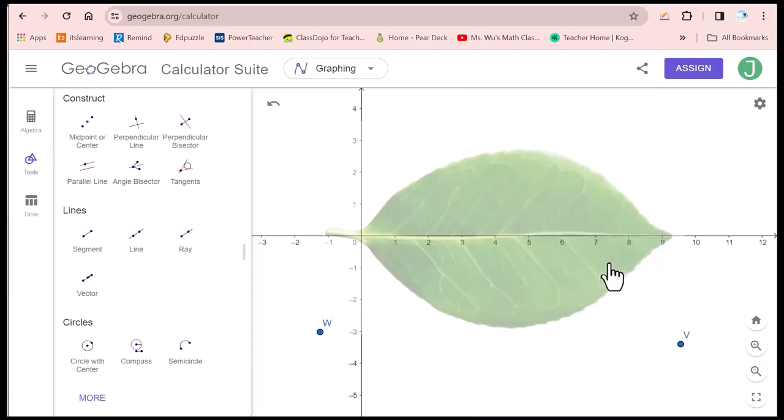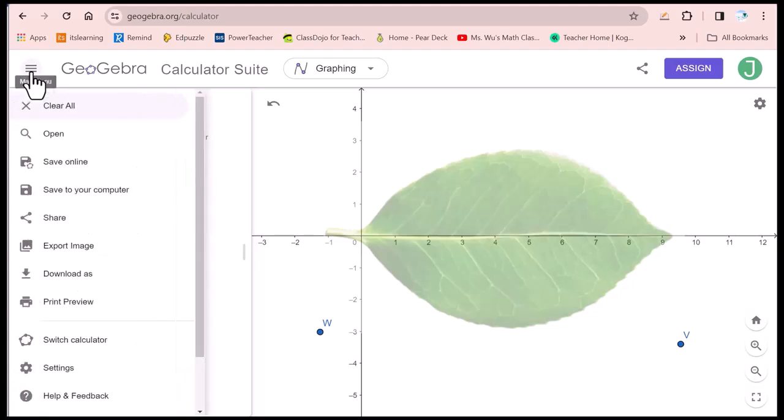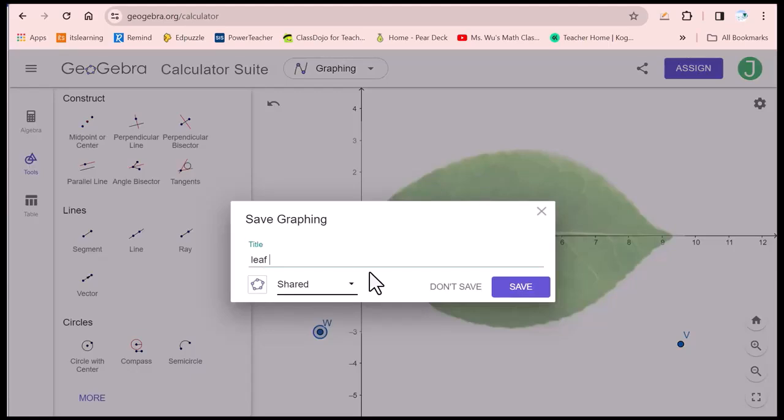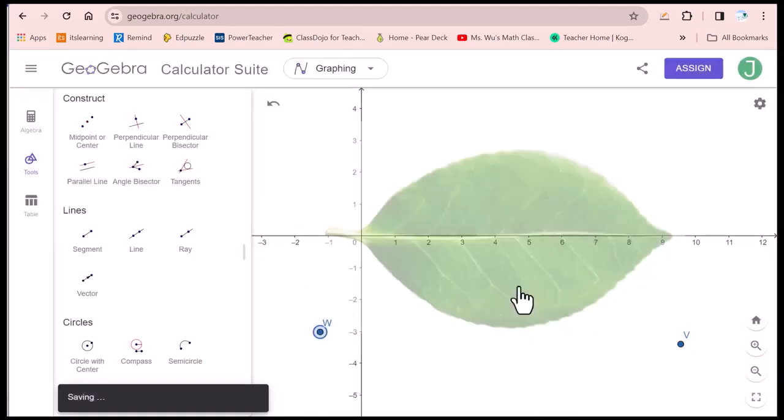So that when you move this coordinate plane around, the image will stay. Then make sure you always save online. Title: Leaf. Save. Do not forget to save the work online frequently.